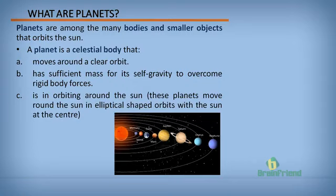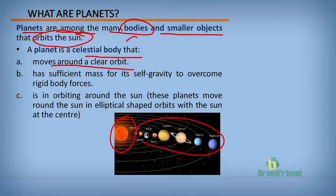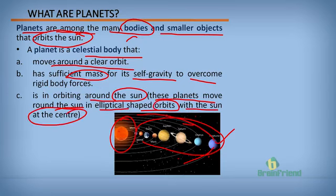What are planets? Planets are among the many bodies and smaller objects that orbit the sun. Like you can see here, this is the sun and these are planets. A planet is also a celestial body that moves around a clear orbit. This is a particular planet moving around a clear orbit. It has sufficient mass for its self-gravity to overcome rigid body forces, and it orbits around the sun in an elliptical shape with the sun at the center.